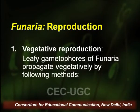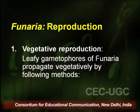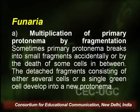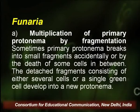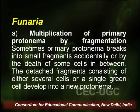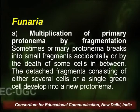Reproduction in Funaria can take place vegetatively. The leafy gametophores can propagate vegetatively with the help of protonema fragmentation. The first and most common mode is multiplication of primary protonema by fragmentation — sometimes the primary protonema breaks into small fragments accidentally.